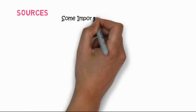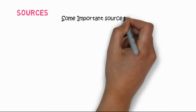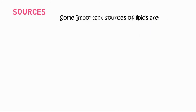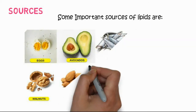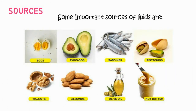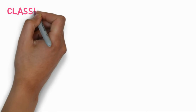Below are some important sources of lipids. In this picture you can see sources from both animals and plants, such as eggs, avocados, sardines and other fish, walnuts, and almonds. There are also various oils, and these represent some of the more common sources.